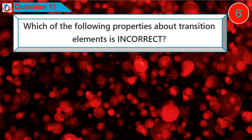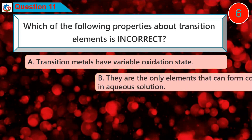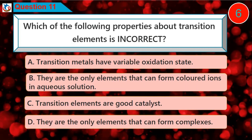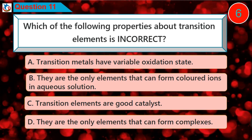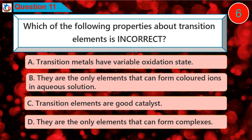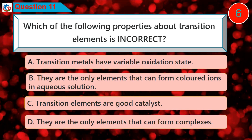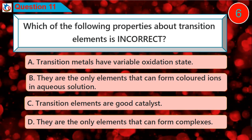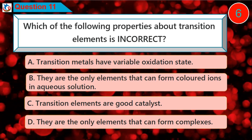Question 11: Which of the following properties about transition elements is incorrect? A. Transition metals have variable oxidation states. B. They are the only elements that can form colored ions in aqueous solution. C. Transition elements are good catalysts. D. They are the only elements that can form complexes.